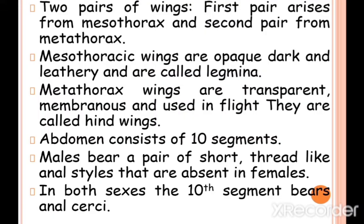The metathorax wings are transparent, membranous, and used in flight — they are called hind wings. So in summary, the wings from the mesothorax are opaque, dark, and leathery (tegmina), while wings from the metathorax are transparent, membranous, and used for flight (hind wings).